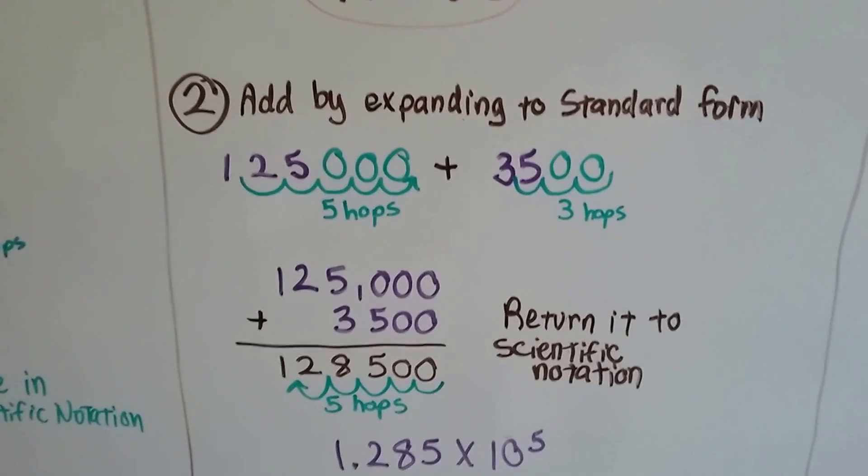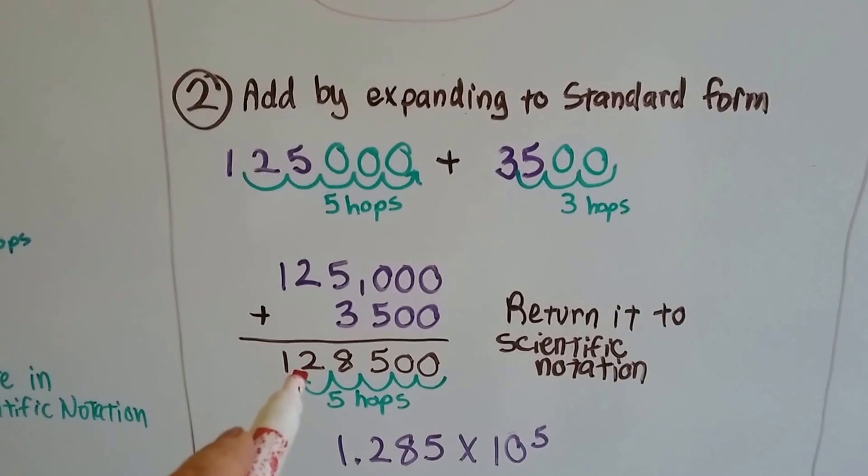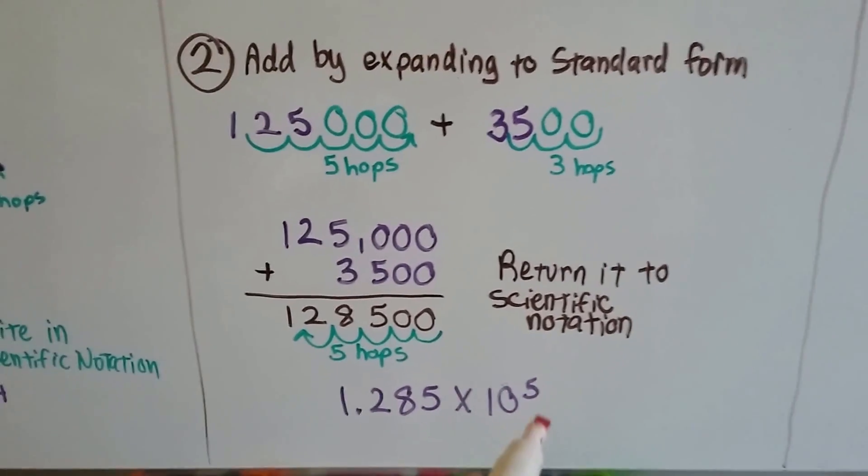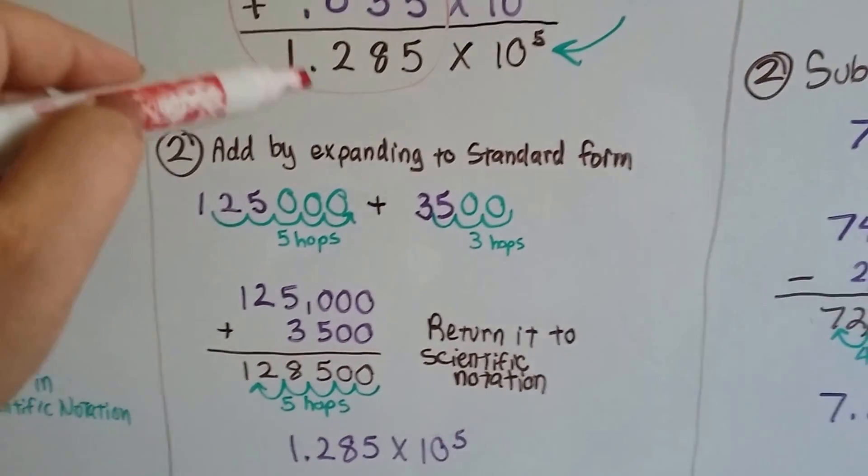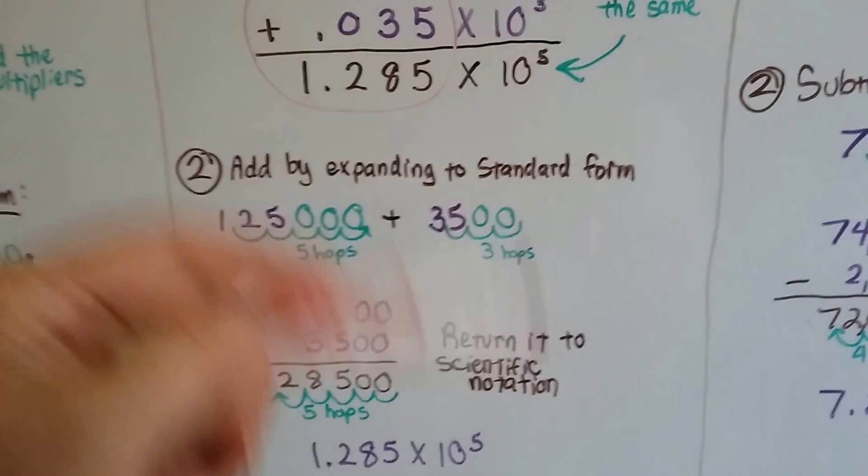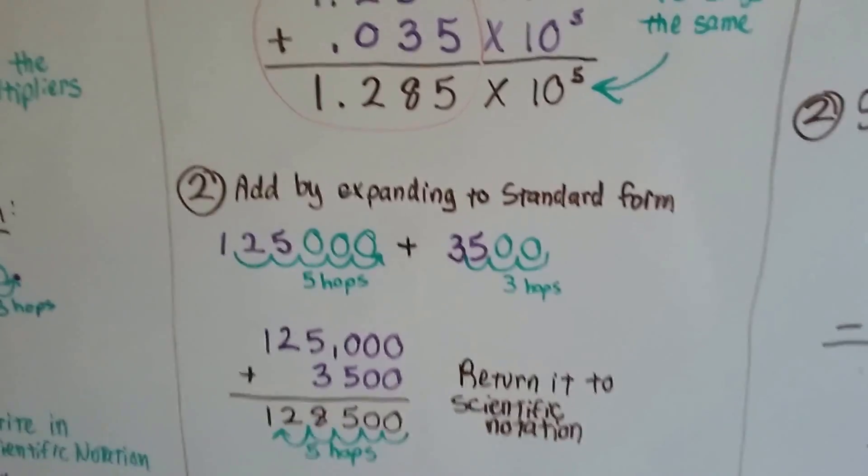I return it to scientific notation by going 1, 2, 3, 4, 5 hops, and I get 1.285 times 10 to the 5th power, just like I did here: 1.285 times 10 to the 5th power. So it doesn't matter which way you do it, whichever way you're comfortable. You really should know how to do both ways.